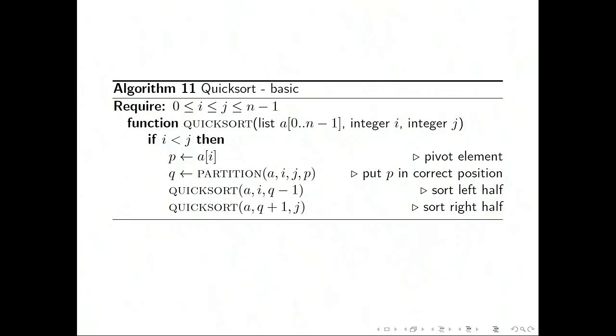This is the simplest version of quicksort, so it just chooses the leftmost element, first element of the list.